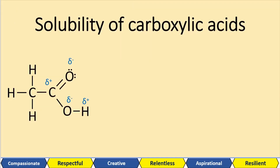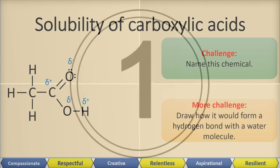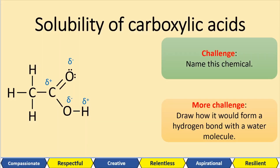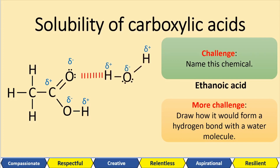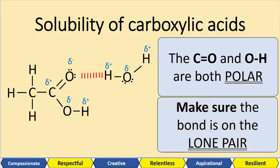Let's now look at the solubility of carboxylic acids. Looking at the partial charges — it's ethanoic acid with two carbons. Hydrogen bonds form from lone pairs, so we need the hydrogen bond coming out of one of the lone pairs, interacting with hydrogen on water, and showing the partial charges on the water — because oxygen is electronegative, the hydrogens are partially positive (delta positive). Both the carbonyl and the hydroxyl groups are polar, and you need to make sure the hydrogen bond is shown on the lone pair.